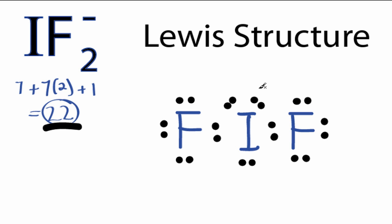That's okay, because Iodine is in period 5 of the periodic table, it can hold more than 8 valence electrons.